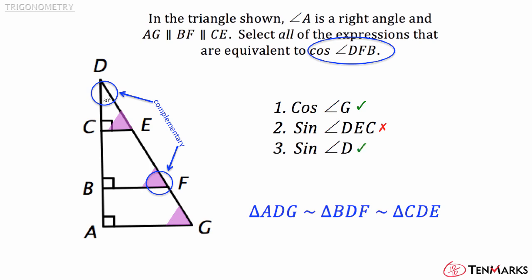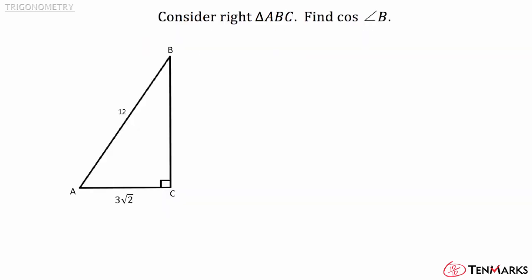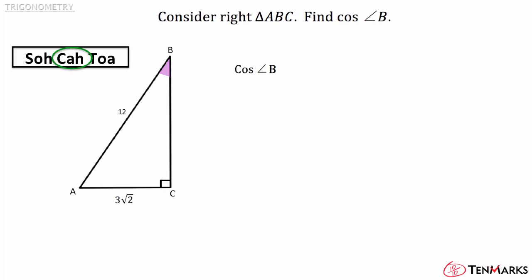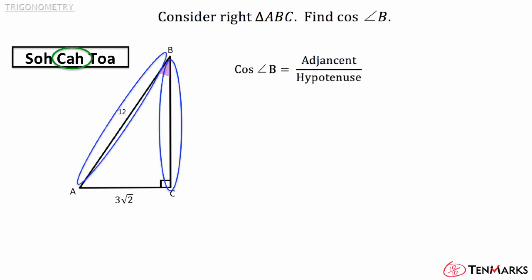Let's try one more problem. Consider right triangle ABC. Find the cosine of angle B. What is the ratio for cosine? Think about SOH-CAH-TOA — cosine is the adjacent over the hypotenuse. So the adjacent over the hypotenuse is equal to CB over 12. Without the length of CB, you don't have enough information to solve the problem. So what can you do to find it?